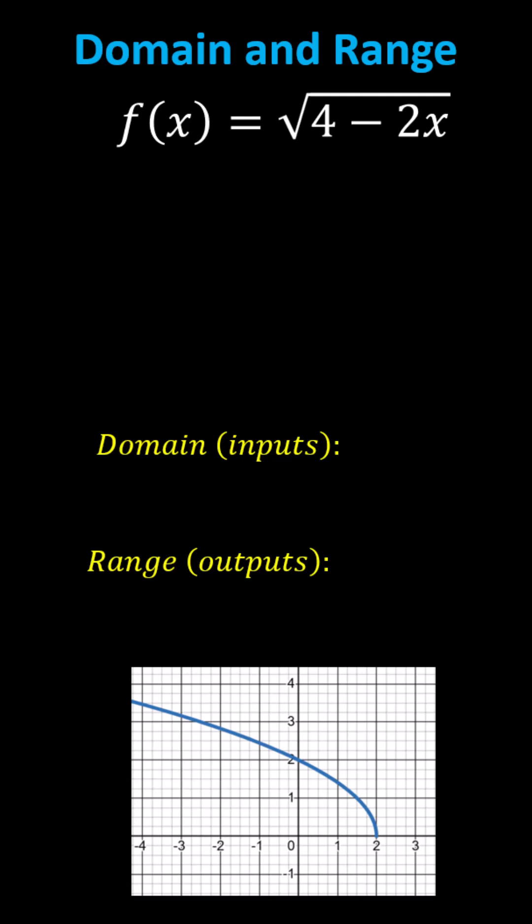Determine the domain and range for the given square root function. We have f(x) equals the square root of the quantity 4 minus 2x. Recall the domain is the set of inputs or x values. The range is the set of outputs, which are the function values or y values.